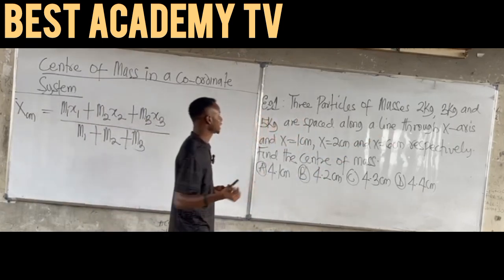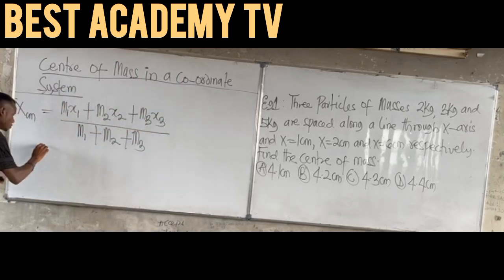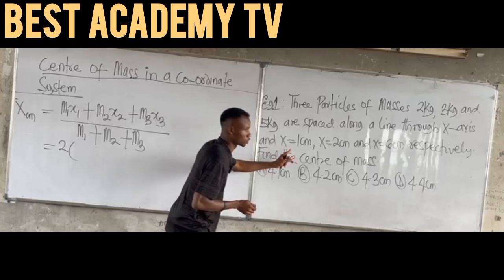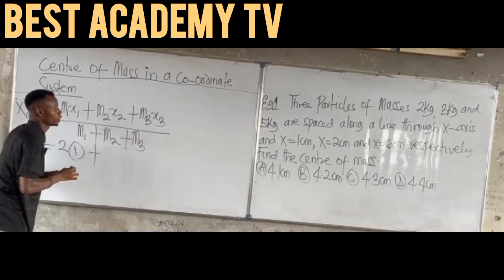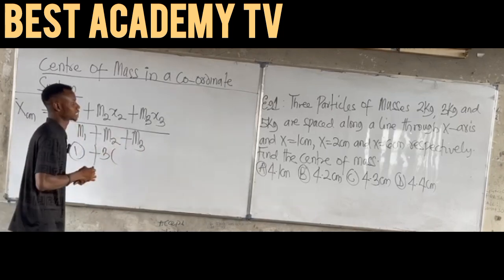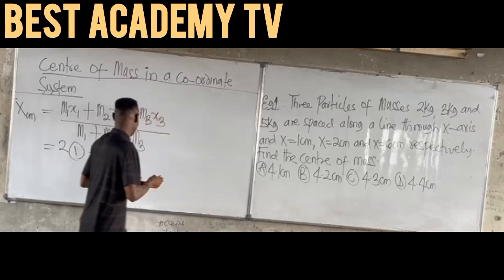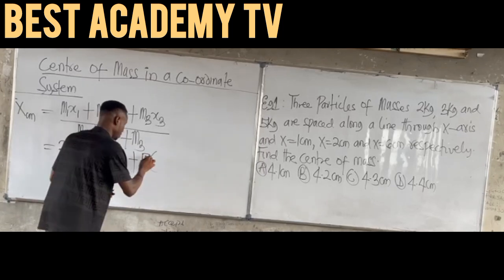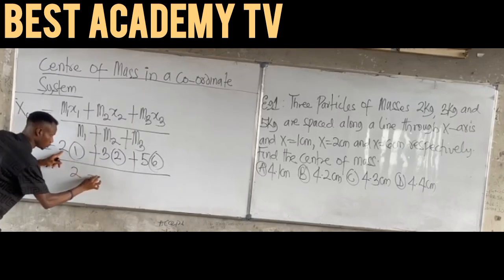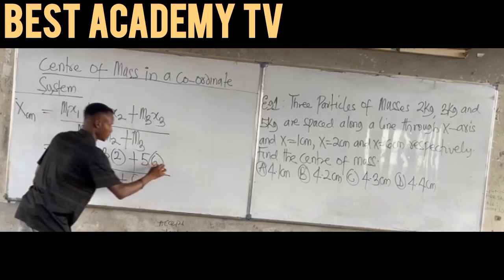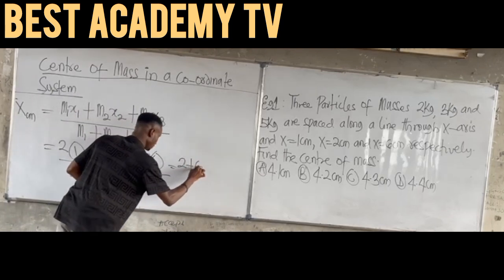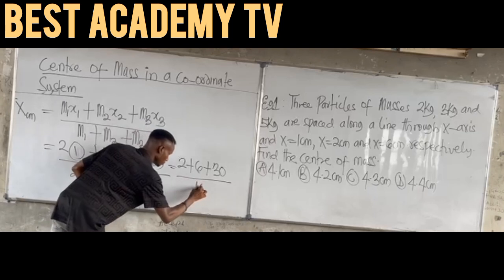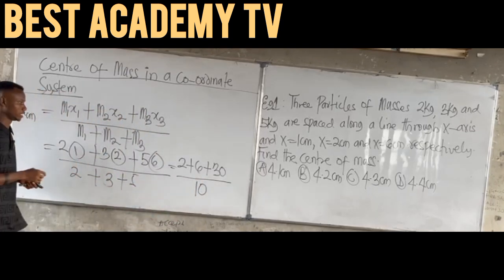Now let's substitute. M1 is 2, S1 is 1. M2 is 3, S2 is 2. M3 is 5, S3 is 6. Over 2 plus 3 plus 5. Simplifying: 2×1 gives 2, 3×2 gives 6, 5×6 gives 30. The denominator: 2 plus 3 plus 5 gives 10.